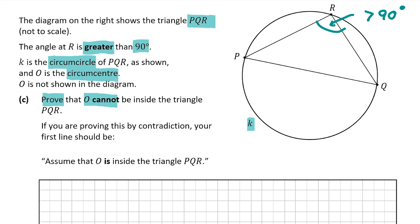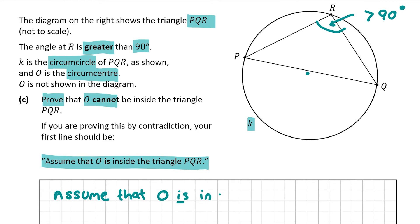If K is the circumcircle, O must be at the center of the circle. It's pretty obvious that O can't be inside the triangle, but we need to actually prove it. The question hints that we should prove it by contradiction, so our first line is: assume that O is inside the triangle PQR.